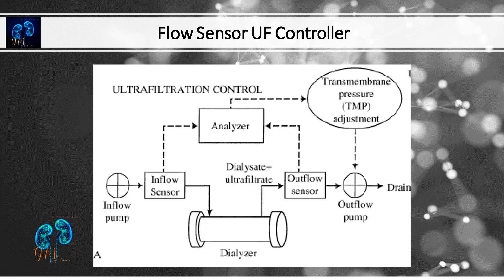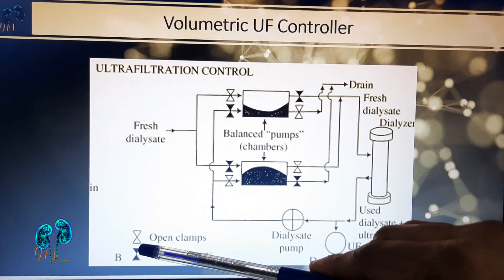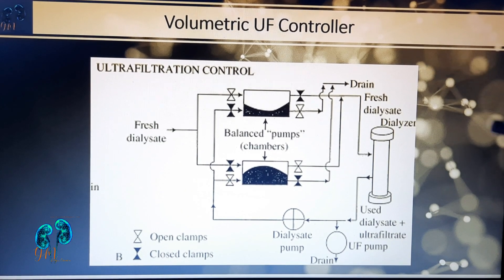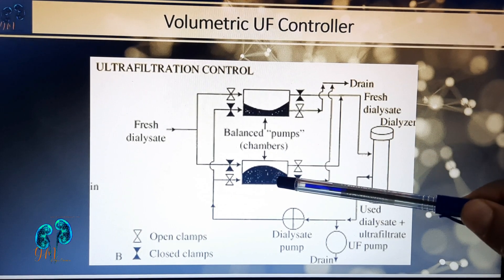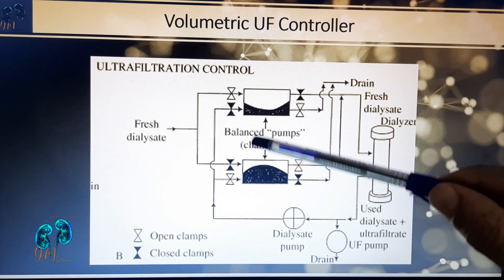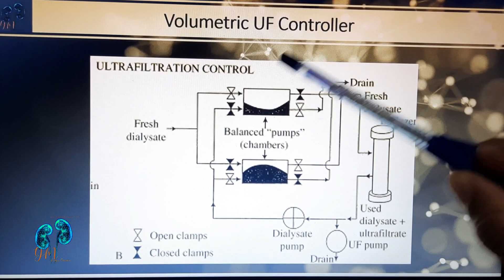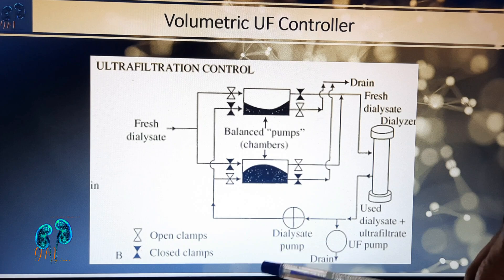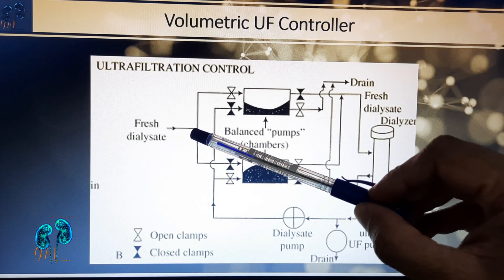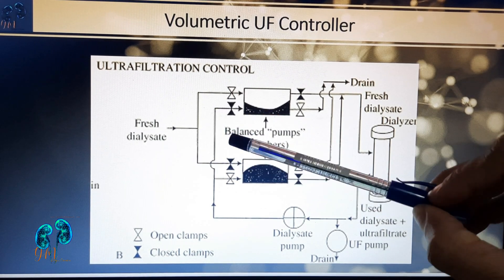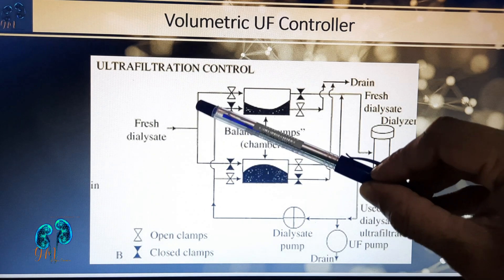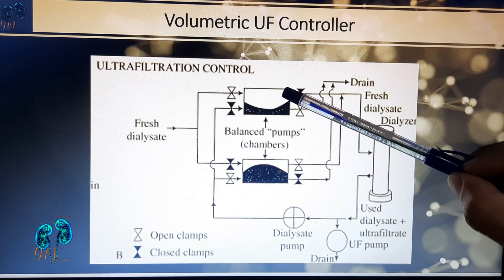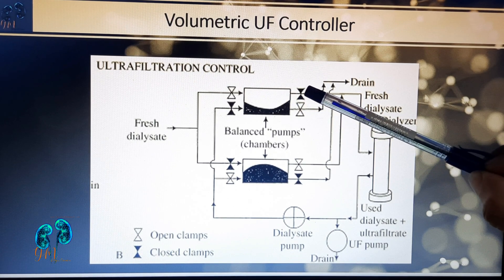When the ultrafiltration pump is off, transmembrane pressure will differ and there is no net ultrafiltration. In the diagram, there are two types of valves: white (open) and black (closed). Volumetric-based ultrafiltration control has two balancing chambers separated by a flexible membrane, plus a dialyzer inlet, outlet, and drain system. Valves are connected on the inlet and outlet of each chamber. Fresh dialysate goes through the white open valve into the chamber, as the black valve is closed.